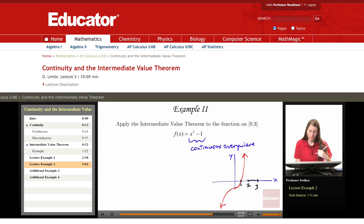We're looking at the interval 0 to 3. Now the intermediate value theorem says that if we look at f(0) and f(3), we get 0 cubed minus 1 which is negative 1, and we get for f(3), 3 cubed minus 1 which is 26.